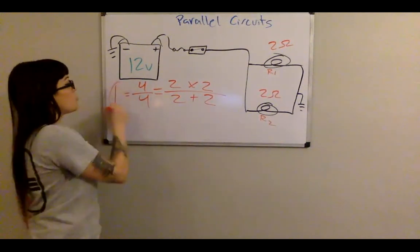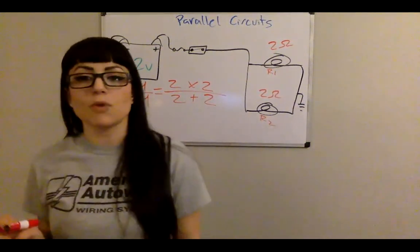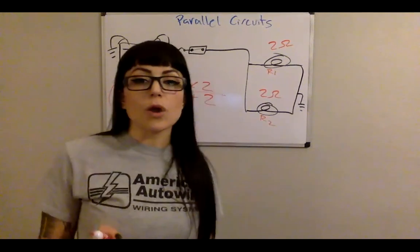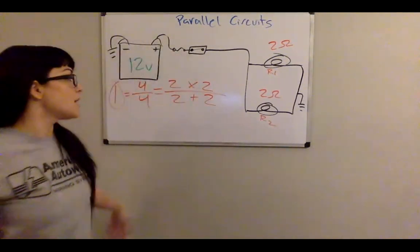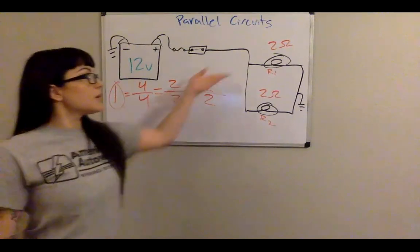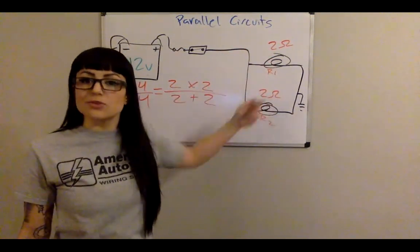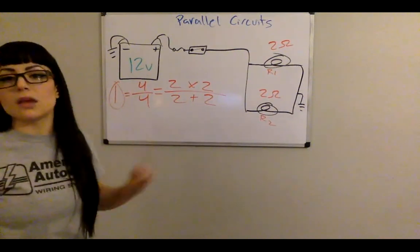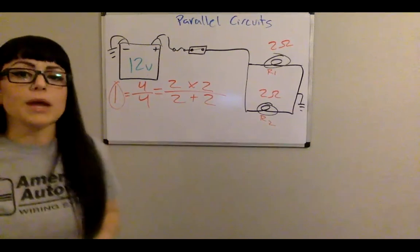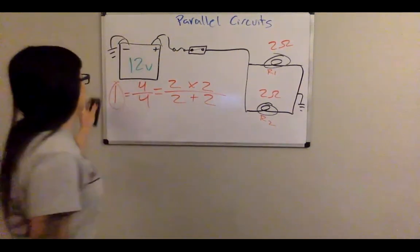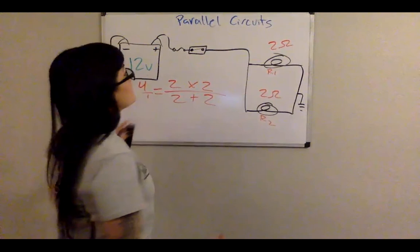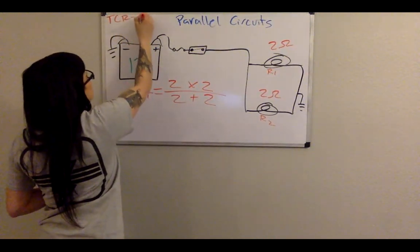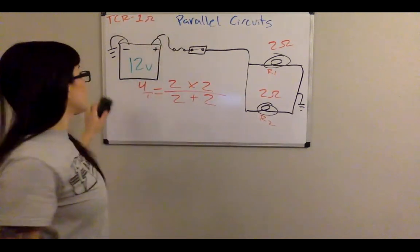Let me back up — I mentioned TCR is always going to be lower than the lowest resistor. We can double-check: both resistors are 2 ohms, and our TCR is 1 ohm, which is indeed lower. So we know we're correct. That's how you get TCR using the formula.